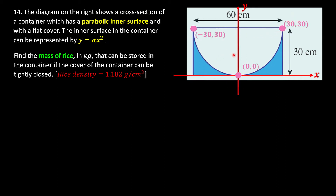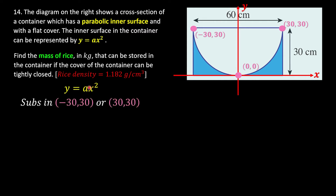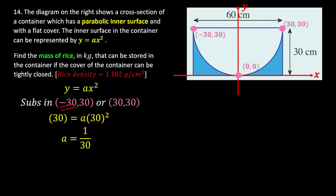Now we can find the unknown 'a'. We substitute either coordinate point into y = ax², but not (0, 0) because 'a' would disappear. Substituting (30, 30): 30 = a × 30², so a = 30/900 = 1/30. Substituting (−30, 30) gives the same result since (−30)² = 900. Therefore a = 1/30.